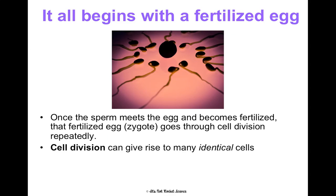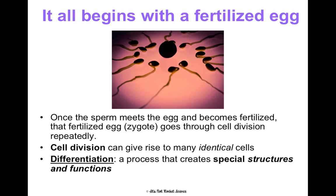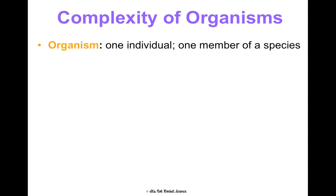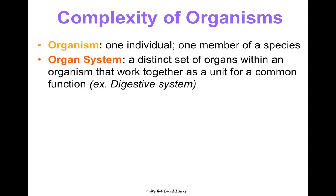You're just a clump of identical cells at first until differentiation happens. That's a process that creates special structures and functions, so certain cells become brain cells or skin cells or hair cells — they become differentiated. These special cells become tissues. Those tissues work together to be organs, and those organs work together in organ systems. An organism is just one individual member of a species — one living thing. An organism has several organ systems, which are distinct sets of organs that work together for a common function, like your digestive system.